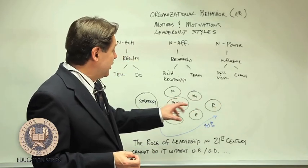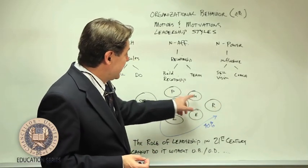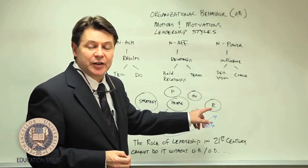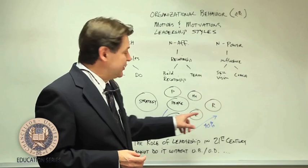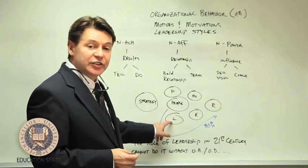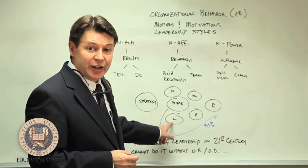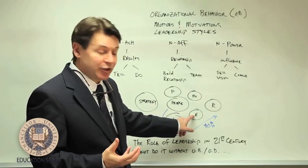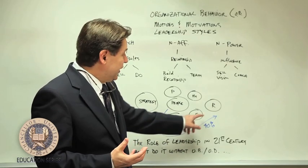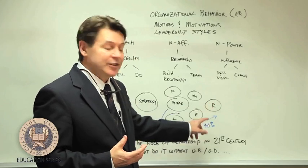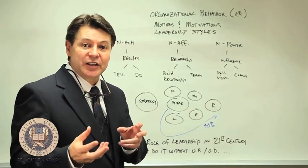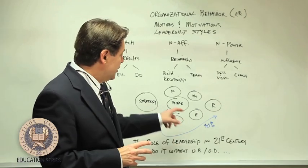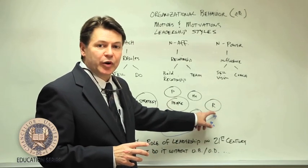Organizations like IBM and GE have found that the strategy and execution approach is still important, but it's only about 60% of where results come from. What more and more organizations are finding is that the leaders you choose, the leadership styles people use, the environments they create — the climate and the culture — account for about 40% of the difference in results from one organization versus another. So this is becoming more and more important.